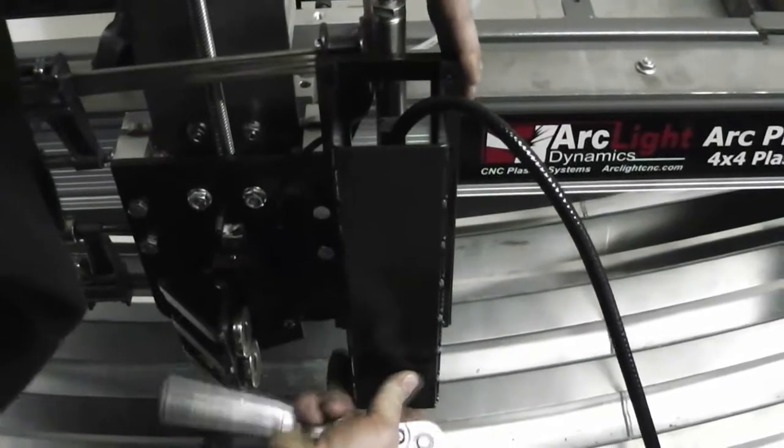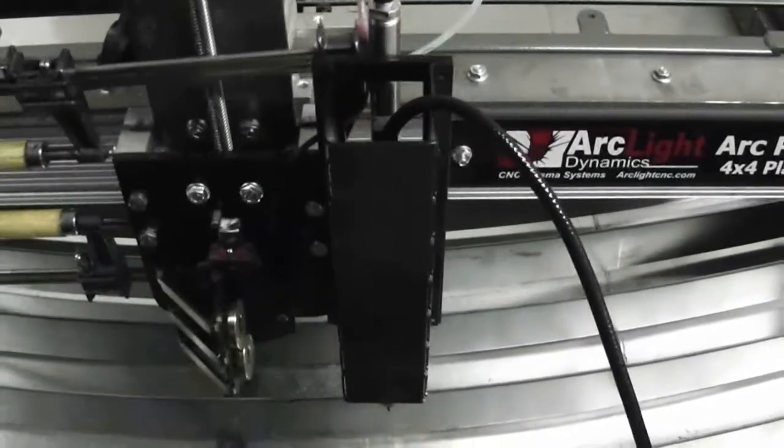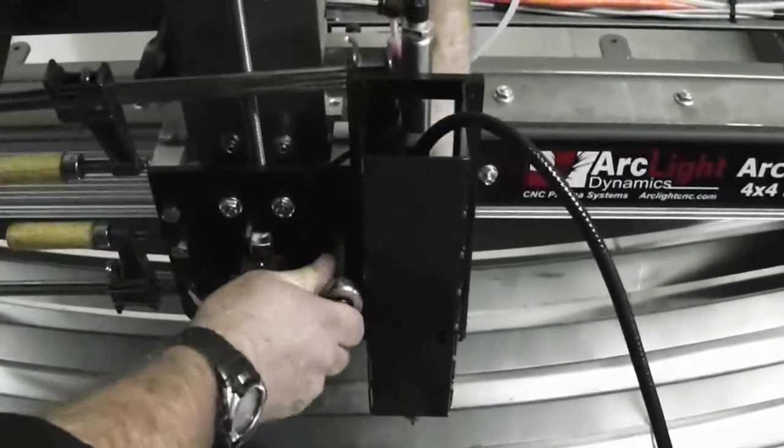Once this is held in place, you will then tighten down the bolts and also ensure that the actual slide for the engraver is vertical.